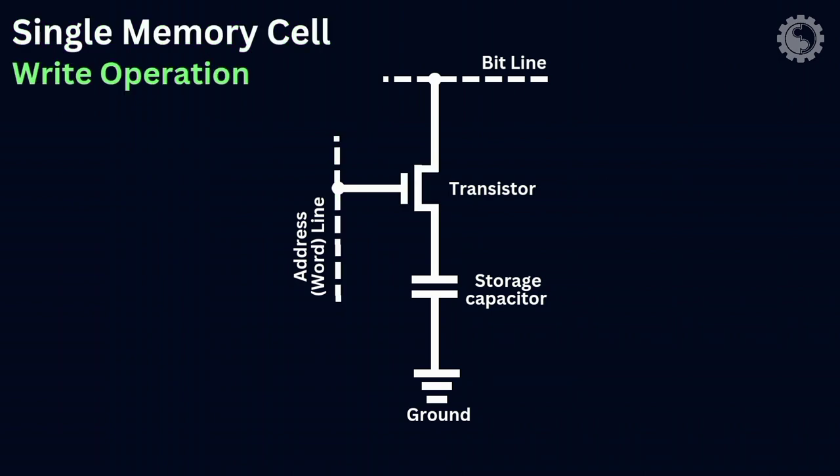During the write operation, a voltage is applied on the bit line and a signal is applied to the address line to close the transistor. Then the voltage applied on the bit line transfers to the capacitor and is stored there.